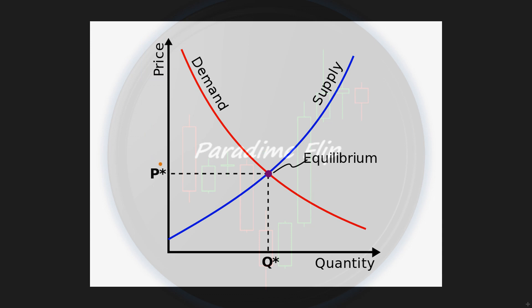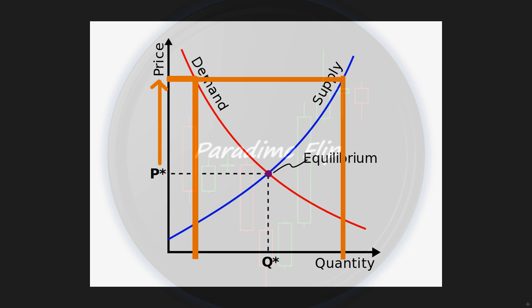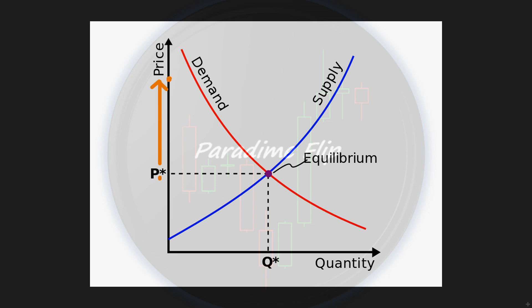When we get an increase in price, if we look at where these dots connect on our demand and supply lines, we notice that naturally with an increase in price we get a reduction in demand, and as price increases suppliers increase the quantity they are selling. It's natural for buyers to reduce their buying as price increases because everyone wants cheaper products, and it's natural for suppliers to increase the amount they sell at higher prices.